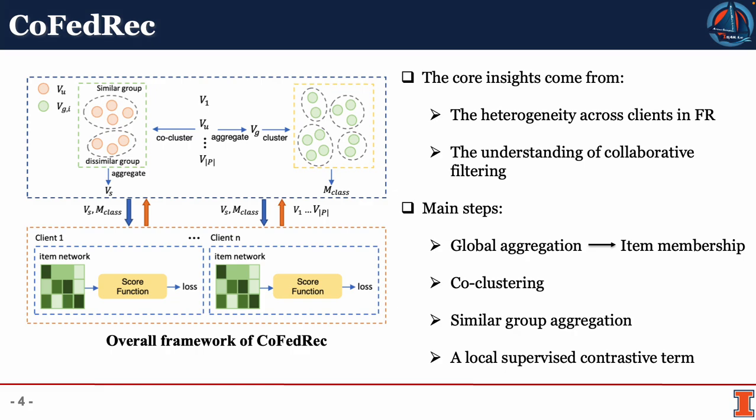The co-clustering is implemented by clustering clients into two groups — the similar group and the dissimilar group — regarding a specific atom category. All clients in the similar group update their atom embedding network with the aggregated group model, while the others return their local model waiting for subsequent communication rounds. Additionally, a local supervised contrastive term is integrated into the local training phase based on the global atom membership, ensuring that the locally learned atom representation aligns with the global item space.